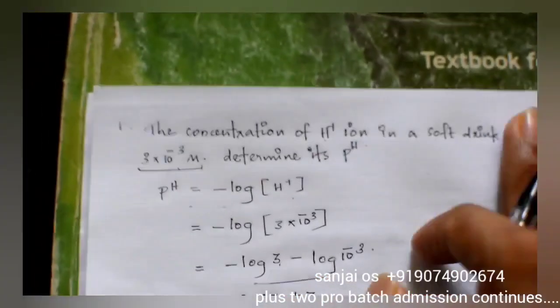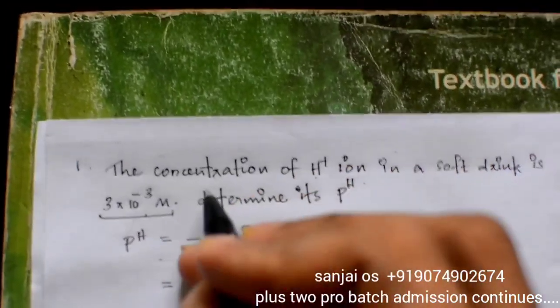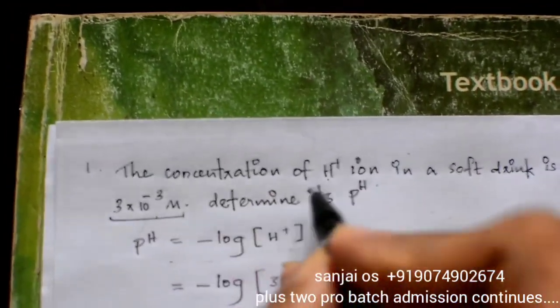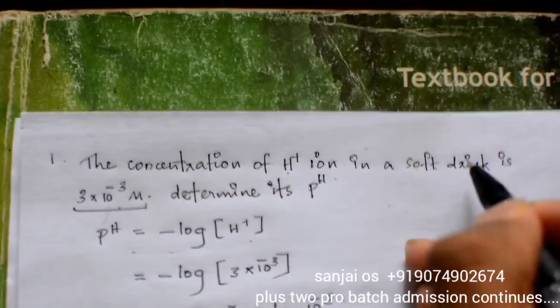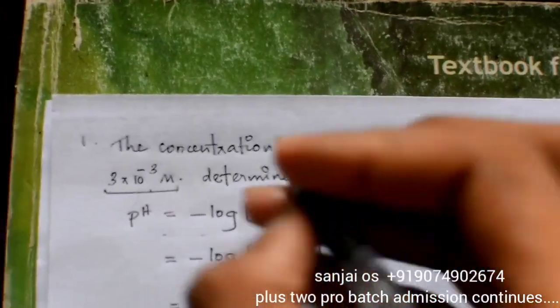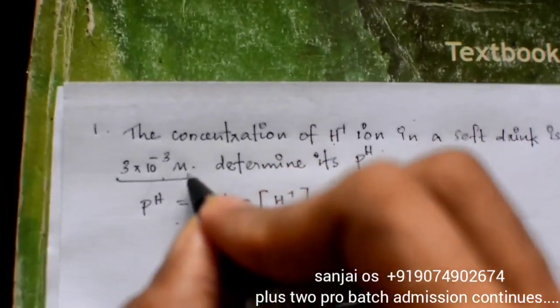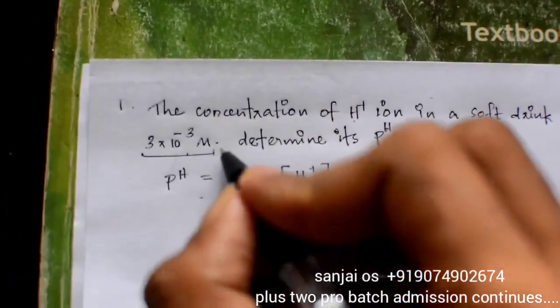Click on the bell icon. The concentration of H plus ion in a soft drink is 3 into 10 raised to minus 3 molar.